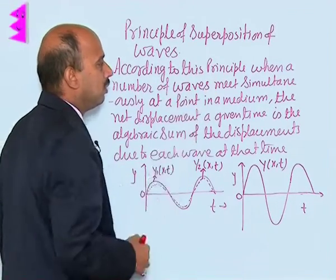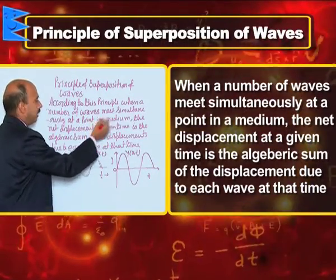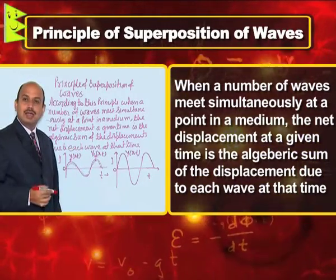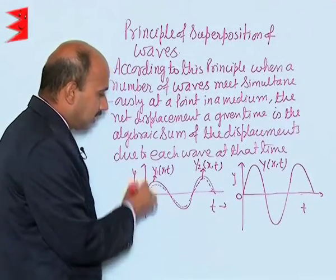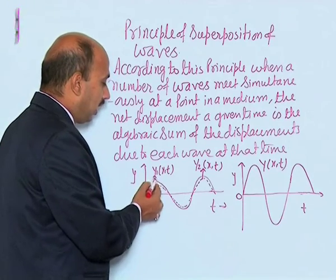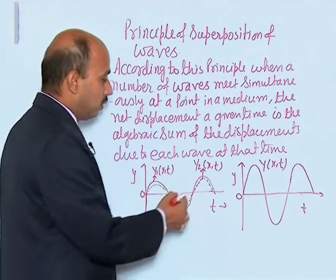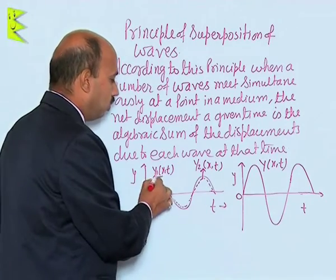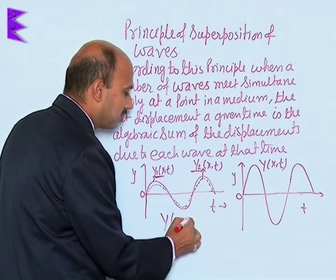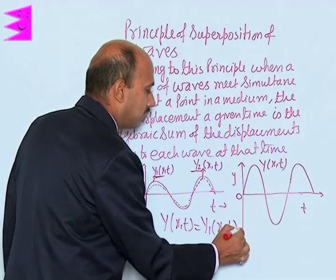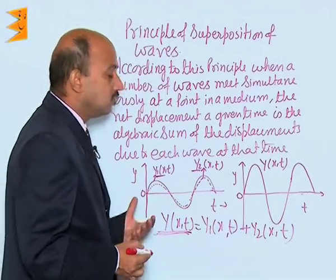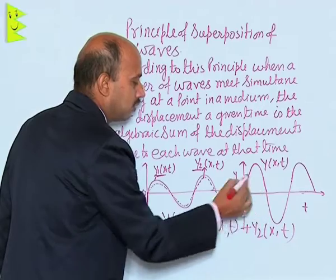According to this principle, when a number of waves meet simultaneously at a point in a medium, the net displacement at a given time is the algebraic sum of the displacement due to each wave at that time. In this graph I have taken two waves - one is represented by a solid line and another by a dotted line. For the solid line y1 is a function of x and t, and for the dotted line y2 is a function of x and t. These are the two displacements for the two waves at any time t. When they superimpose, we write y(x,t) = y1(x,t) + y2(x,t).